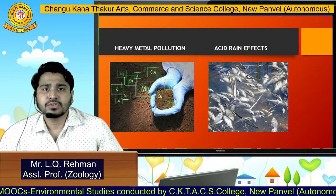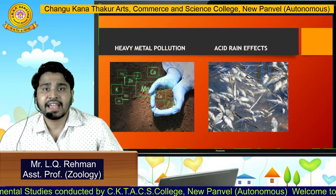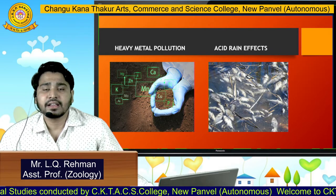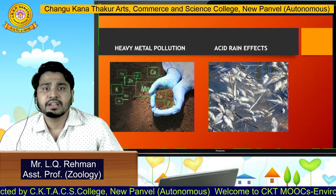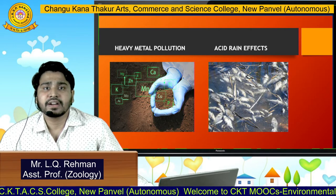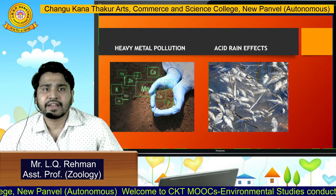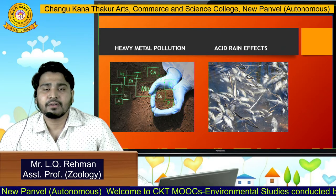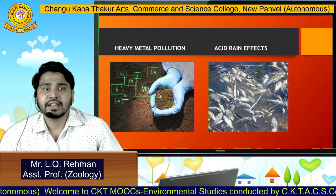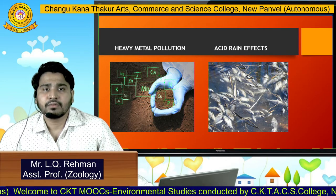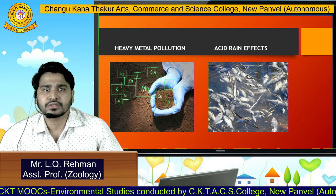Heavy metal pollution is also an example — it accumulates more and more in the soil, leading the soil to lose its fertility. Another is the acid rain effect: harmful rain caused due to pollution affects aquatic animals as well as infrastructure and buildings.